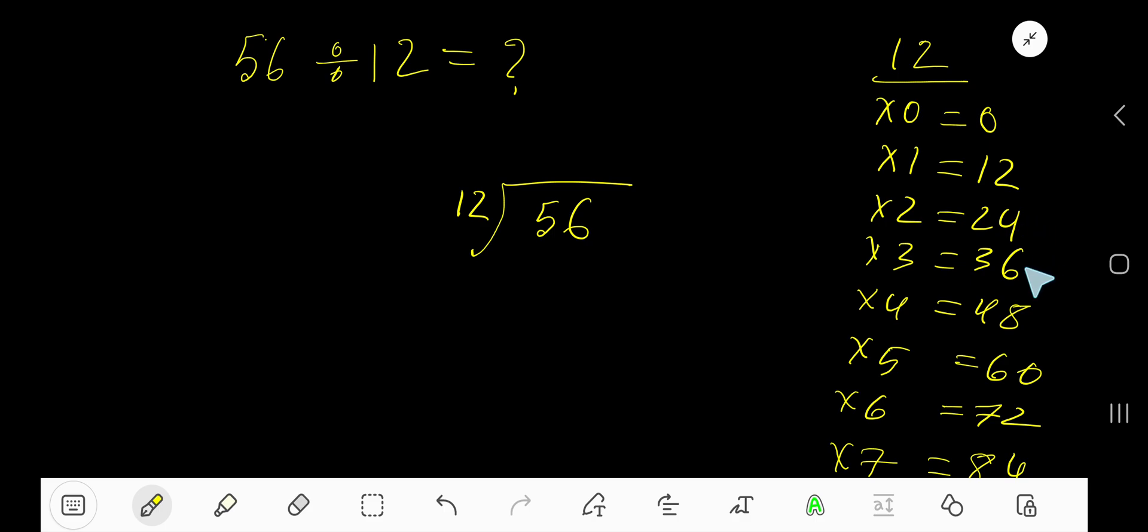36 plus 12 is 48, 48 plus 12 is 60. This process will continue. 12 goes into 5 how many times? 0 times, as 5 is less than 12. 0 times 12 is 0. Subtract 5, bring down this 6.